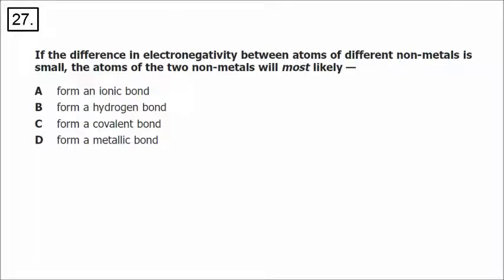Number 27: two non-metals — what type of bond will they have? They're going to have a covalent bond. Two non-metals form a covalent bond; a metal and a non-metal form an ionic bond.